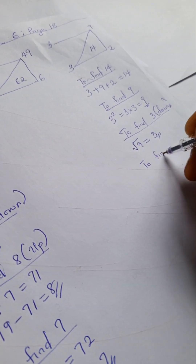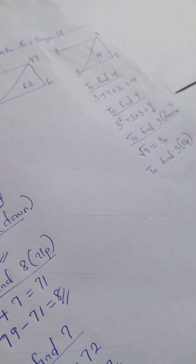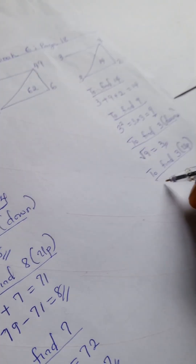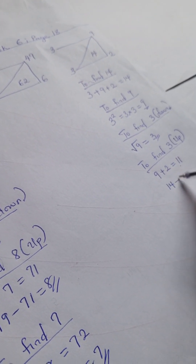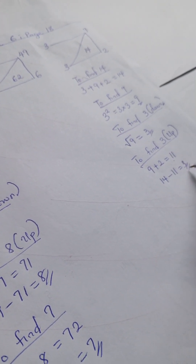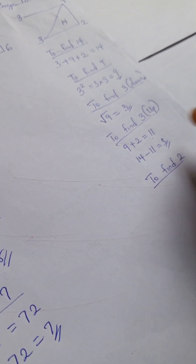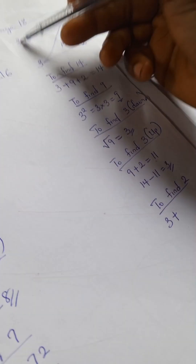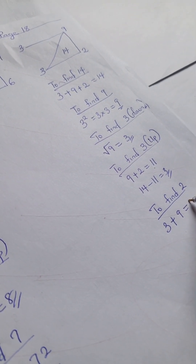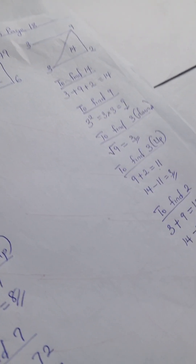To find 3 up, we have 9 plus 2 equals 11, and 14 minus 11 equals 3. And lastly, to find 2: 3 plus 9 equals 12, and 14 minus 12 gives us 2.